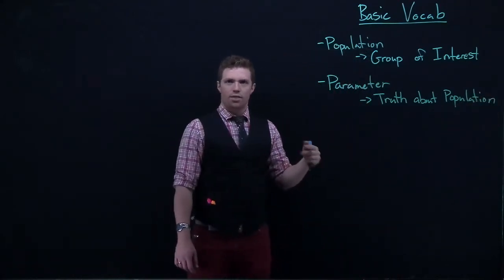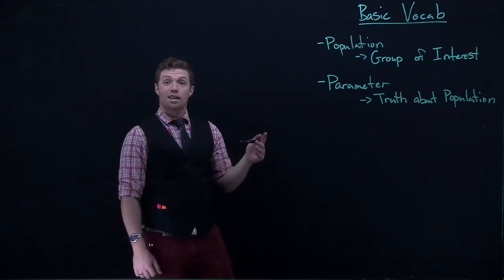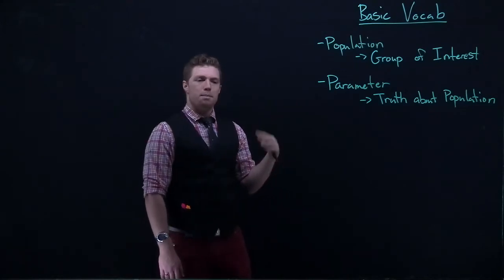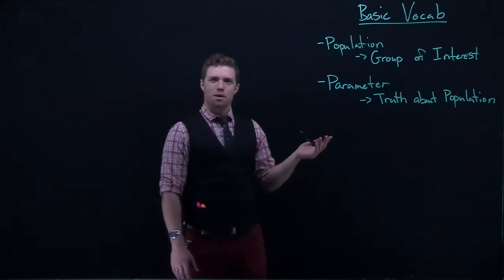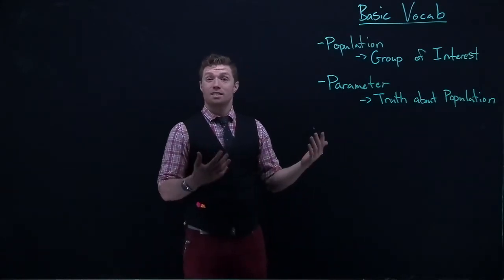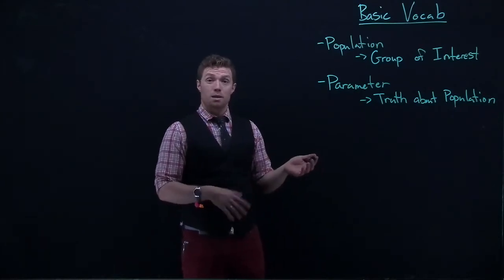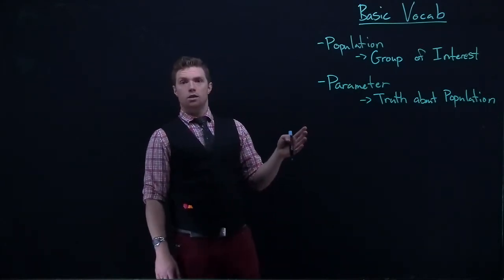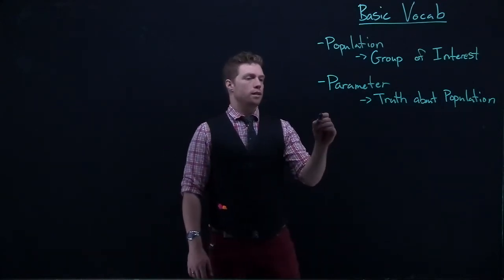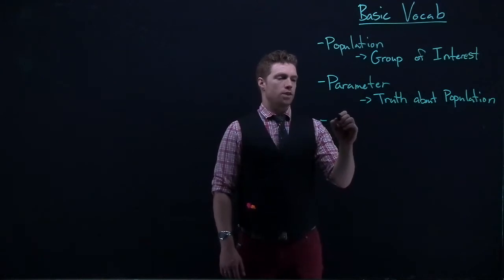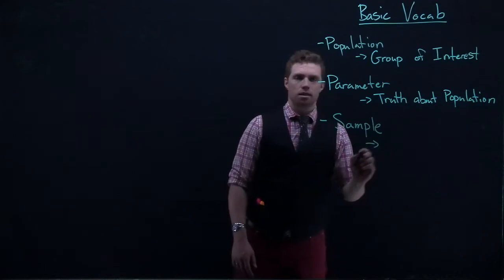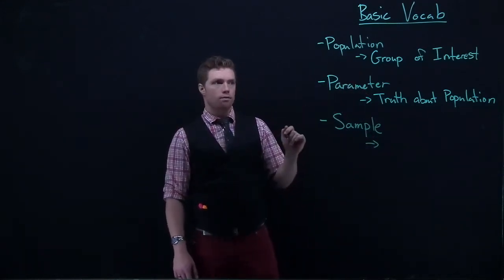Now you might think: that's going to be really hard to do. How many teenagers are there in the entire world? If there are about six to seven billion people and roughly a sixth of them are in the teenage years, that's about a billion people. It would be really hard to actually figure out what this parameter is. So what we do instead is take what's called a sample — in basic terms, a subset of the population.